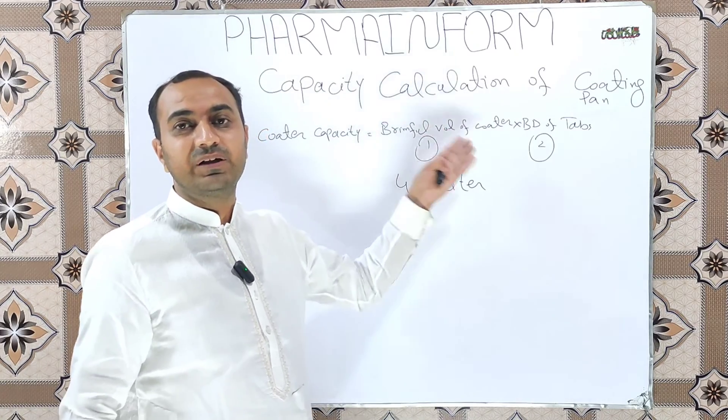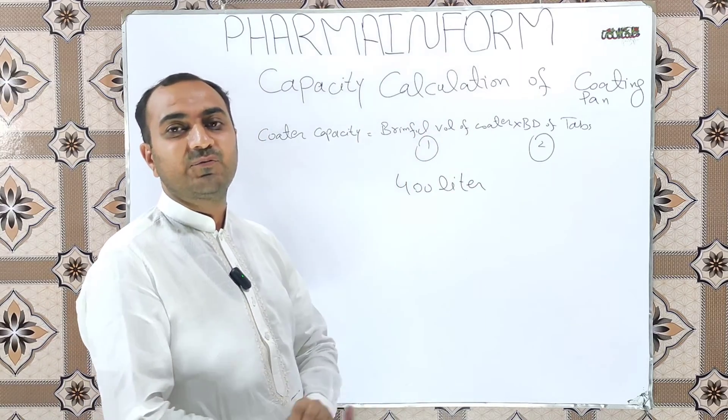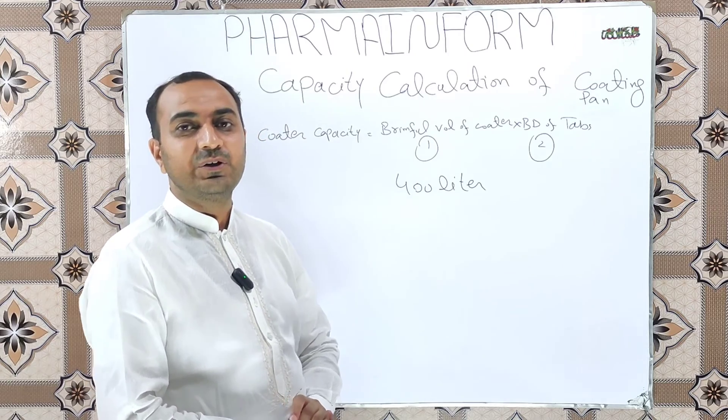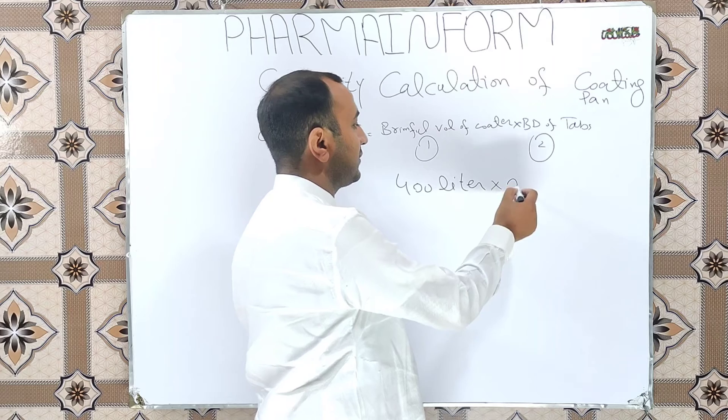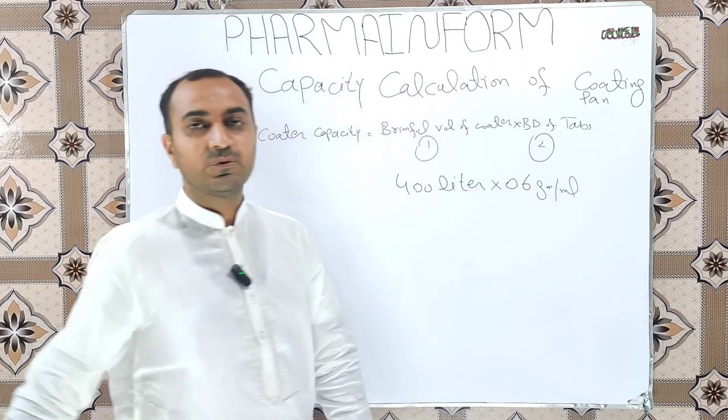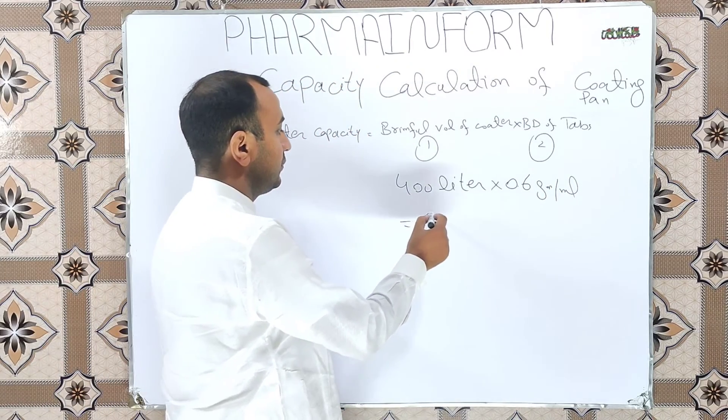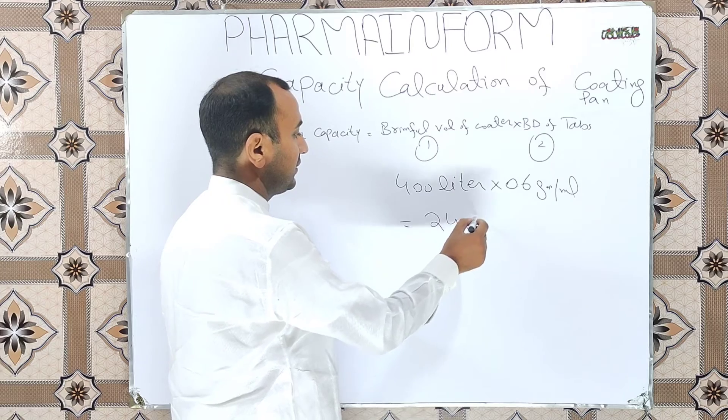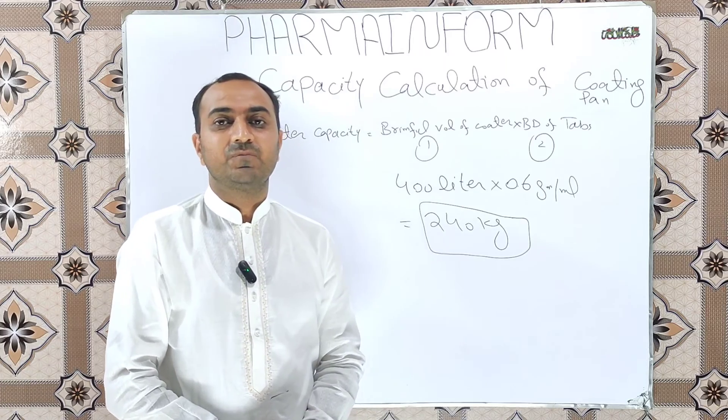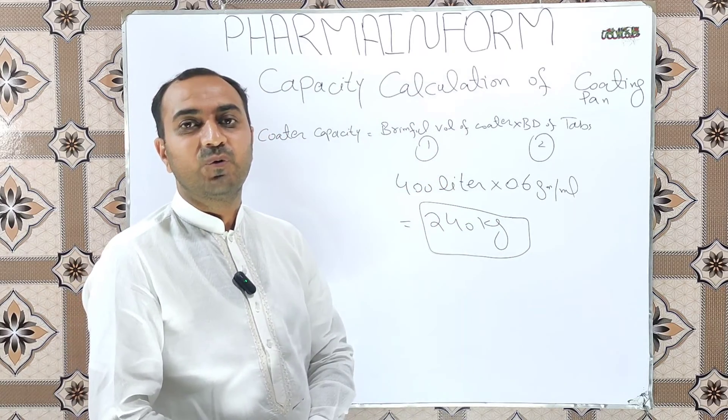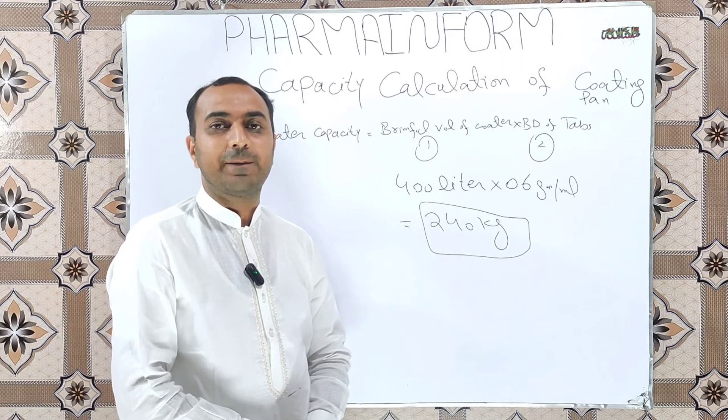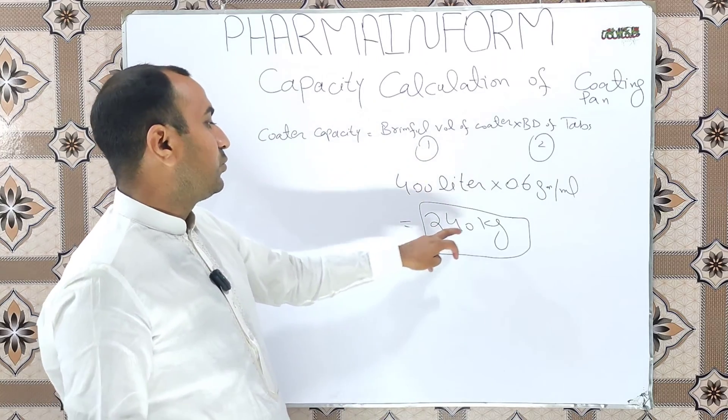How is bulk density of the tablet calculated? The link of the video is given in description. Must watch the video. Suppose the bulk density is equal to 0.6 gram per ml. So the answer will be 240 kilograms. This means our coater capacity having 400 liters brimful volume for the tablets with the bulk density of 0.6 gram per ml is equal to 240 kilograms.